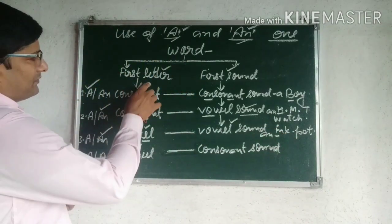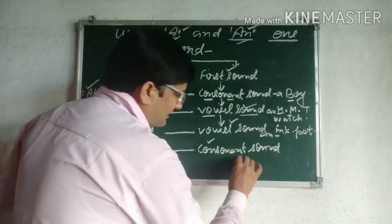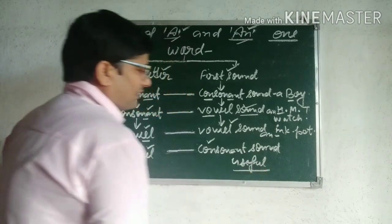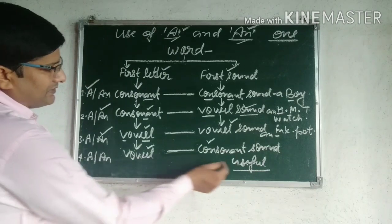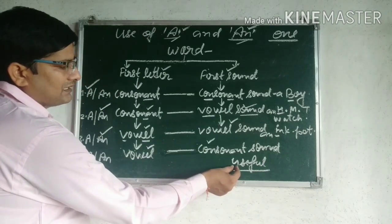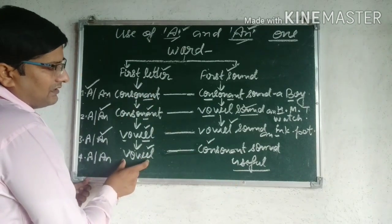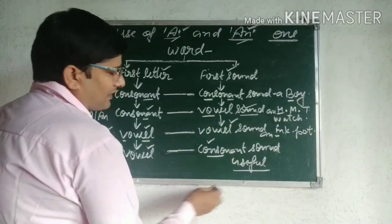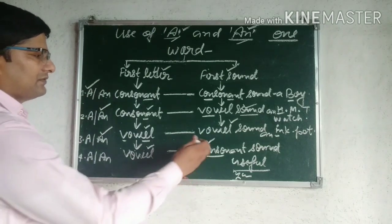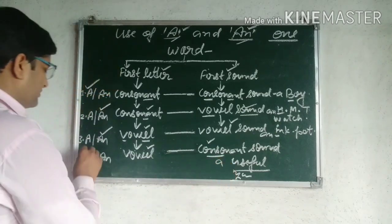Case 4: First letter vowel, but first sound consonant. Example — 'useful': U आपका first letter vowel है — A, E, I, O, U में से — but first sound 'useful' में consonant sound से start हो रहा है. इस condition में 'useful' के पहले A use होगा. I hope अब इसमें कोई confusion नहीं होगा कि A का use कहाँ करें और An का use कहाँ करें — उस शब्द का first sound decide करता है.